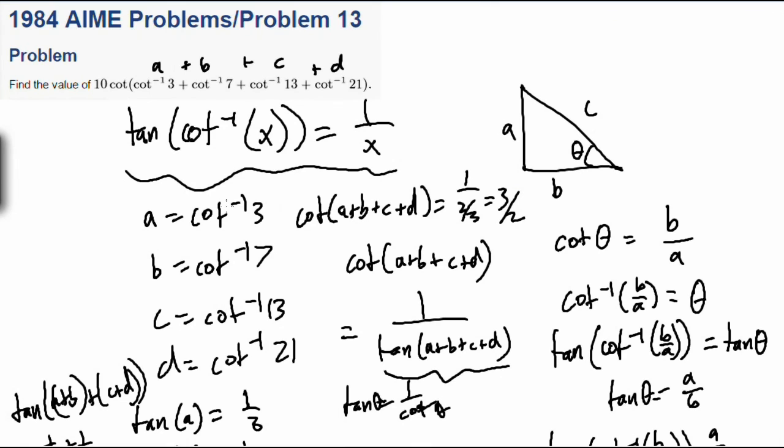Well, not quite yet, because remember, be careful, the question asks for 10 times this quantity. So, of course, 10 times 3 halves is just 15. That's what this quantity equals.